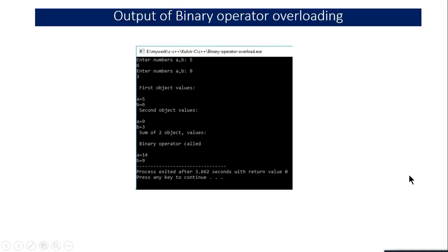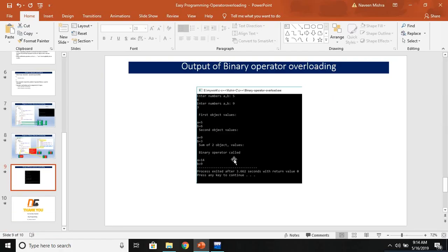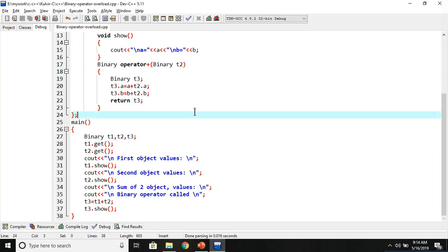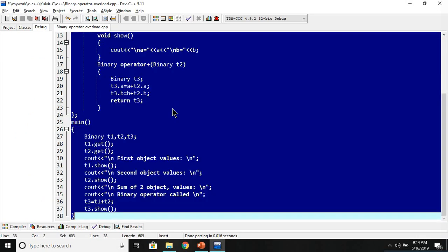You can see the output: first object has values 5 and 6, second object has 9 and 3, and after binary operator overloading, the sum shows 14 and 9. I hope you understood this program. There's another exercise you can try: overloading the greater-than or less-than comparison operator.